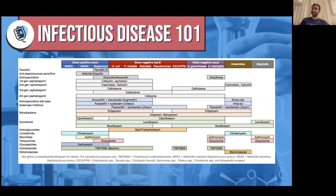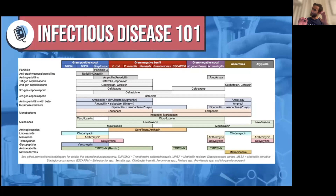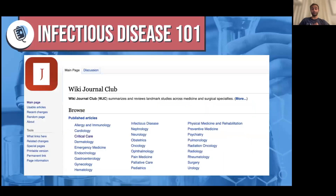So you might be wondering, do we have atypical coverage? The only three antibiotics that usually provide atypical coverage are going to be doxycycline, azithromycin, and Levo — they're right here on the chart. You might also be wondering, is Zosin on here? Everything I'm going to go over today is in this chart, but I'm going to try to simplify it down to the high-yield facts that you need to know for intern year.